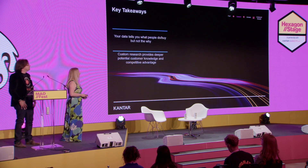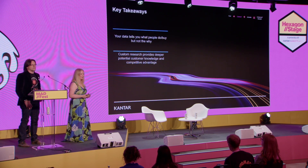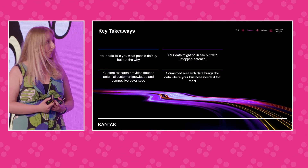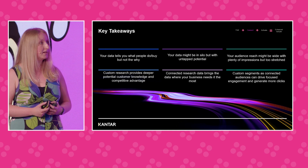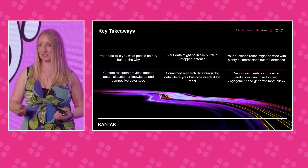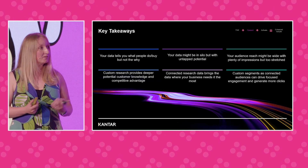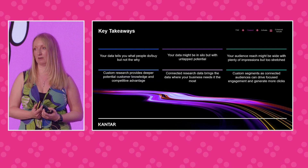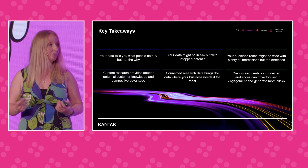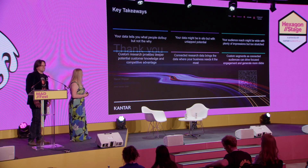Some key takeaways: the data you have tells you what people are doing and buying, but not really the why. Custom research does provide that why, but it's key to connect the two together. Data in your CRM or marketing systems may be in silos but has untapped potential if connected. It brings data to where your business needs it most, so all your teams can use it in a connected way. Your audience reach might be very wide with lots of impressions, but it may be too stretched and not targeting the right people. Custom segments and connected audiences can drive focused engagement, generate more clicks with a smaller reach, and that's where you get your return on investment — spending less but reaching more engaged people and, hopefully, getting more sales through.